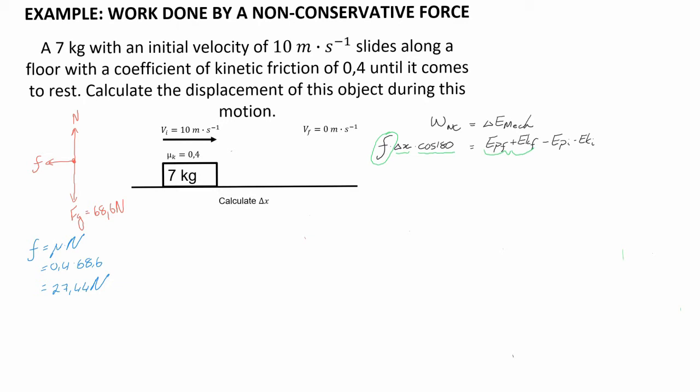Where we can say here that our friction force we have calculated to be 27.44, the displacement is our unknown, and cos of 180 we know is negative one.